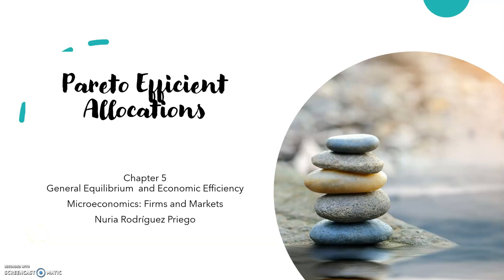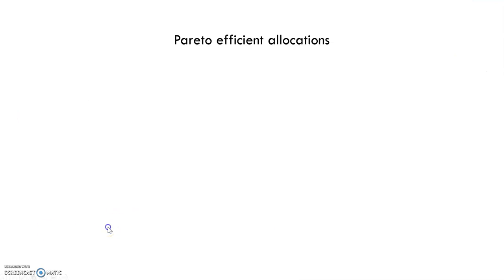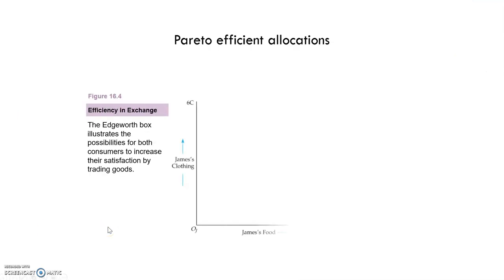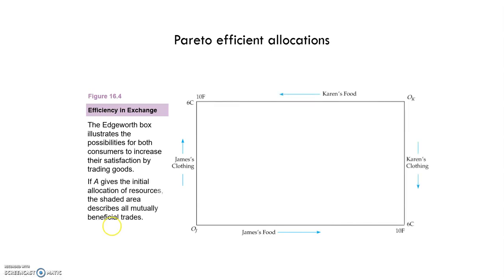Hi, this is the third video of chapter 5, General Equilibrium and Economic Efficiency. In this video we are going to talk about Pareto efficient allocations. Following the last video, where we talked about the Edgeworth box, here in this third video we talk about the Pareto efficient allocation.